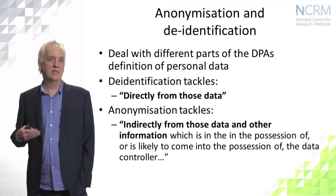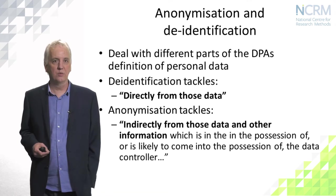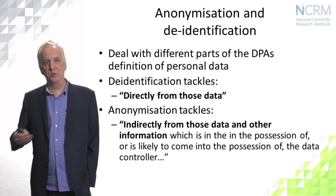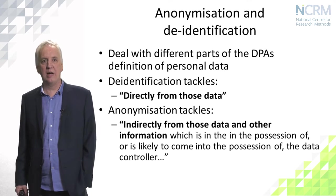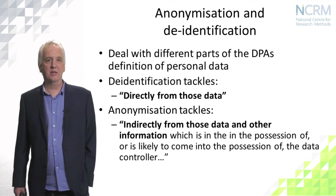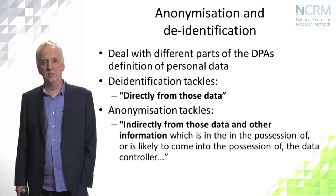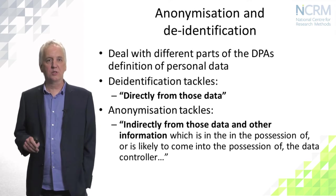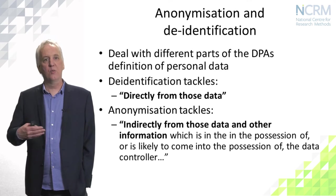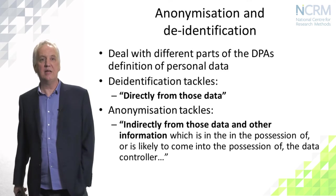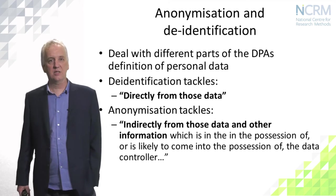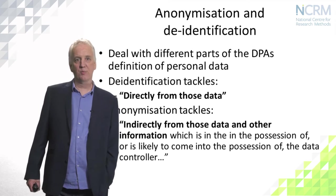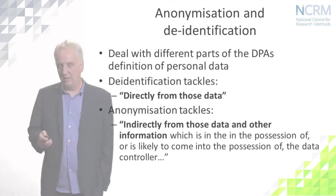De-identification is actually basically quite simple: you simply remove or obscure in some way those direct identifiers. With anonymisation the issue is being able to decide whether a set of indirect identifiers are sufficient to enable somebody to be identified.